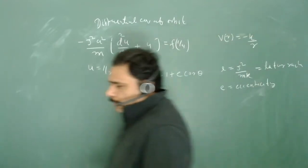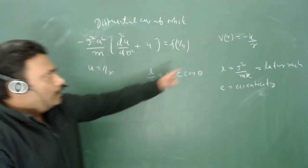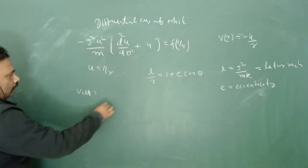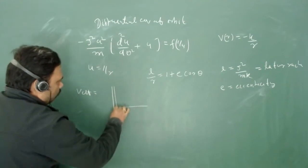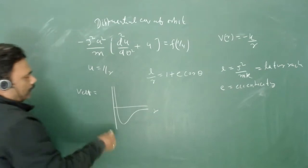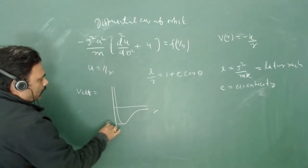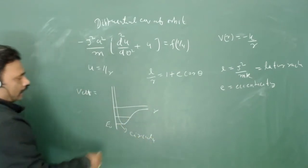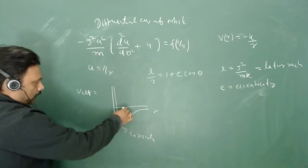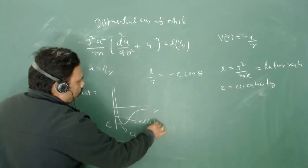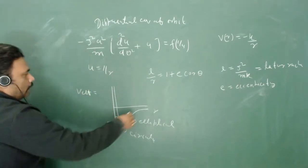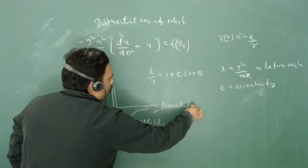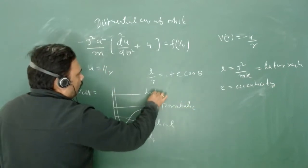For the Kepler potential with a given angular momentum j, the V_effective has a characteristic plot of V_effective versus r. For a given energy: if energy is negative but greater than E₀, you have an elliptical orbit; if energy equals zero, you have a parabolic orbit; and for positive energy, you have a hyperbolic orbit.